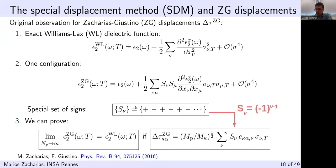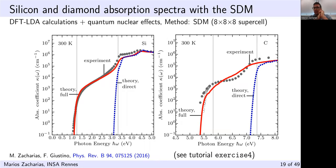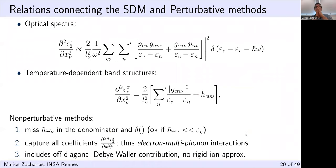For generating special displacements we use the normal coordinate transformation equation, plugging in this choice of signs. For validation, we applied the SDM to silicon and diamond for phonon-assisted spectra and in both cases correctly captured the experimental absorption onset. Some deviations between theory and experiment are mainly attributed to using the independent particle picture. We will see how to do phonon-assisted optical absorption calculations in exercise four of the tutorial.